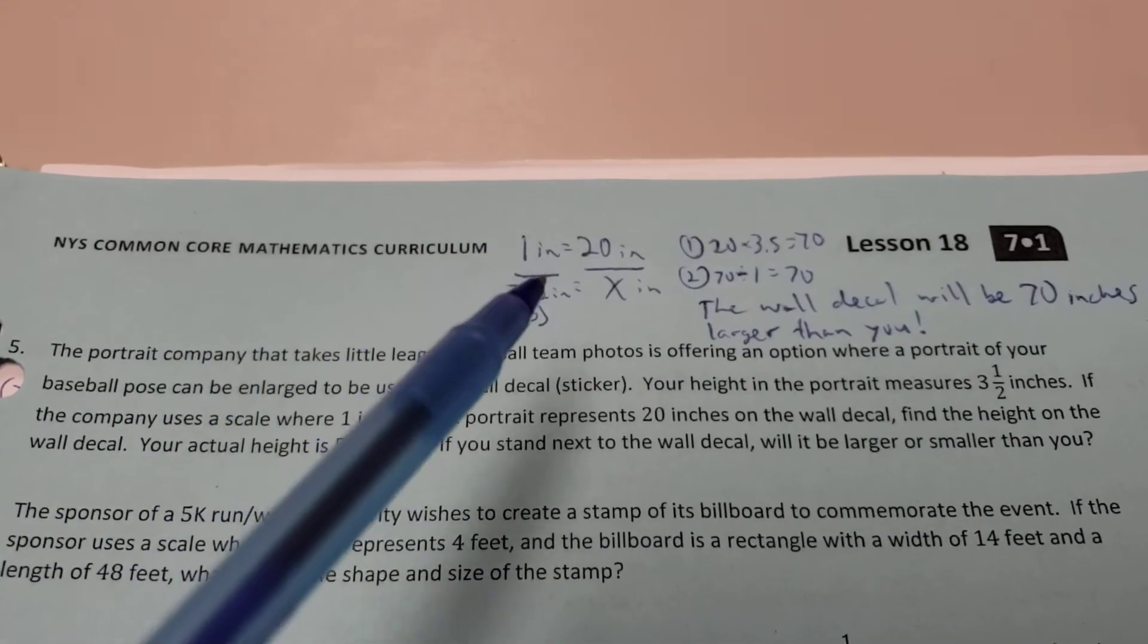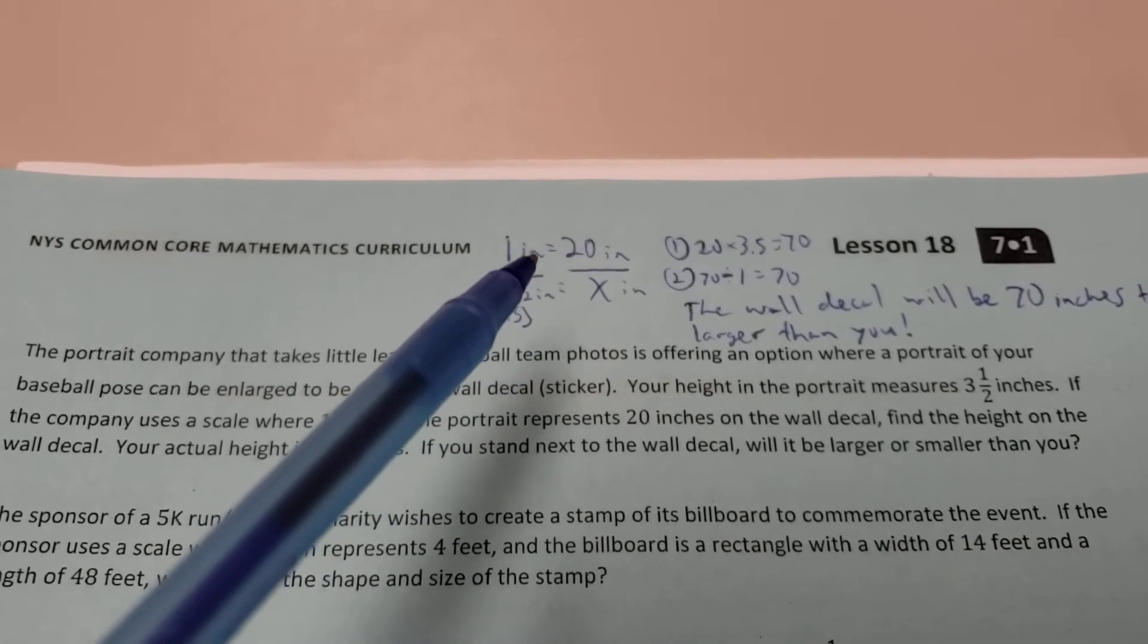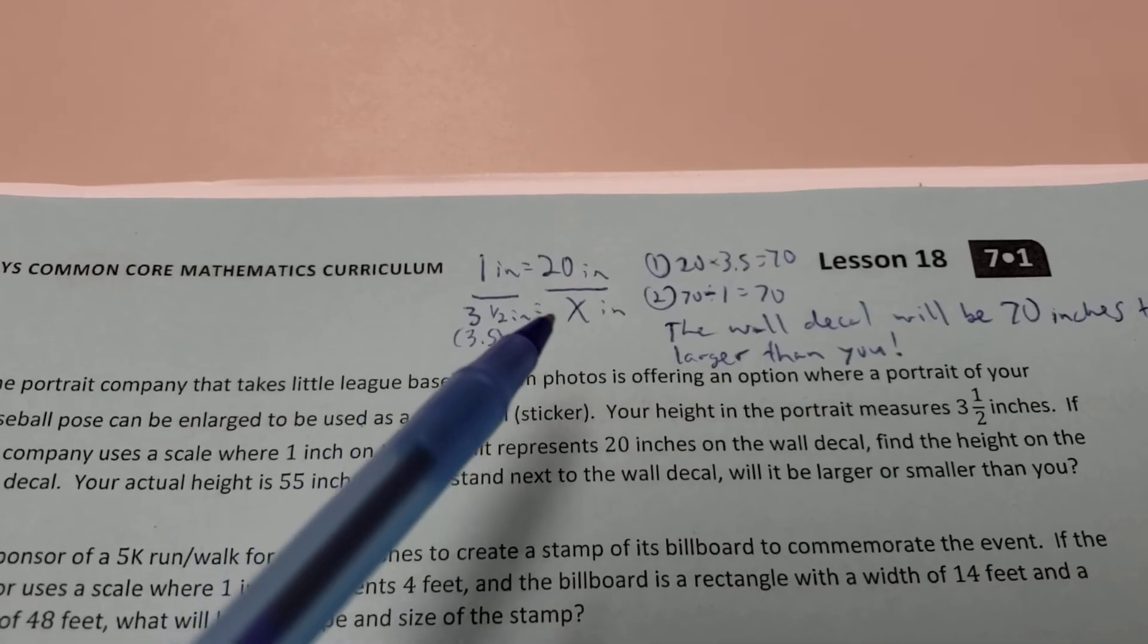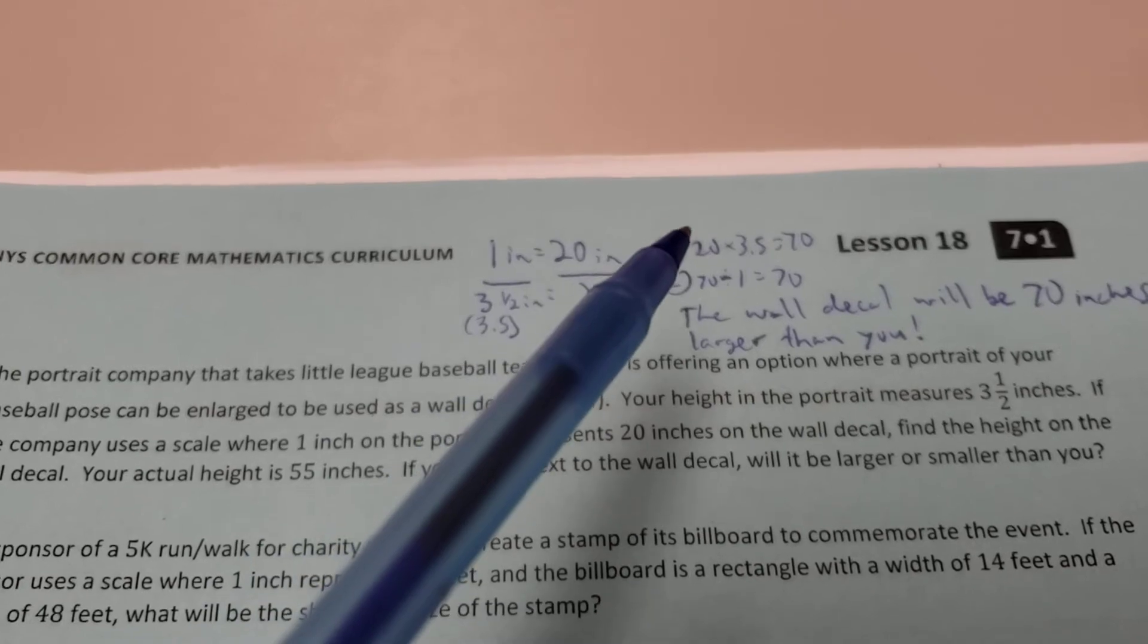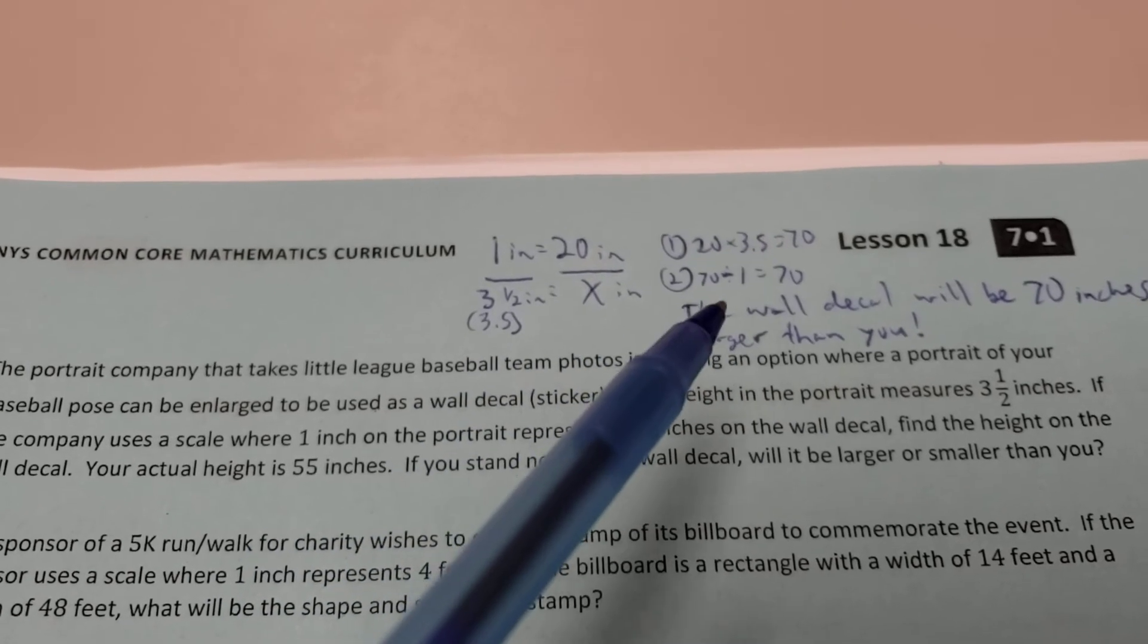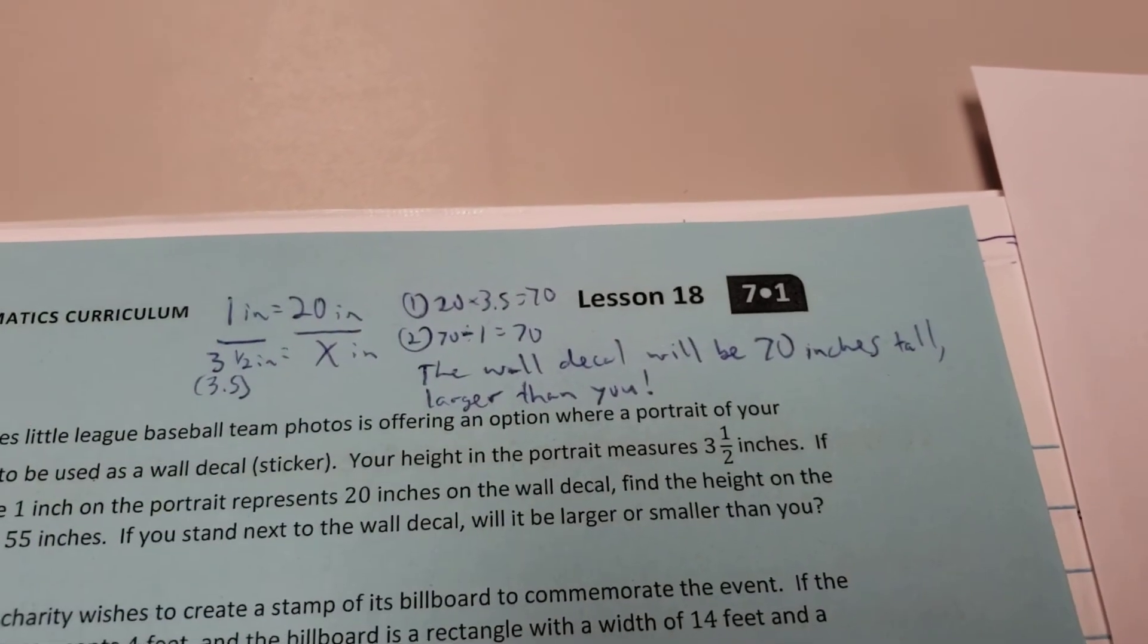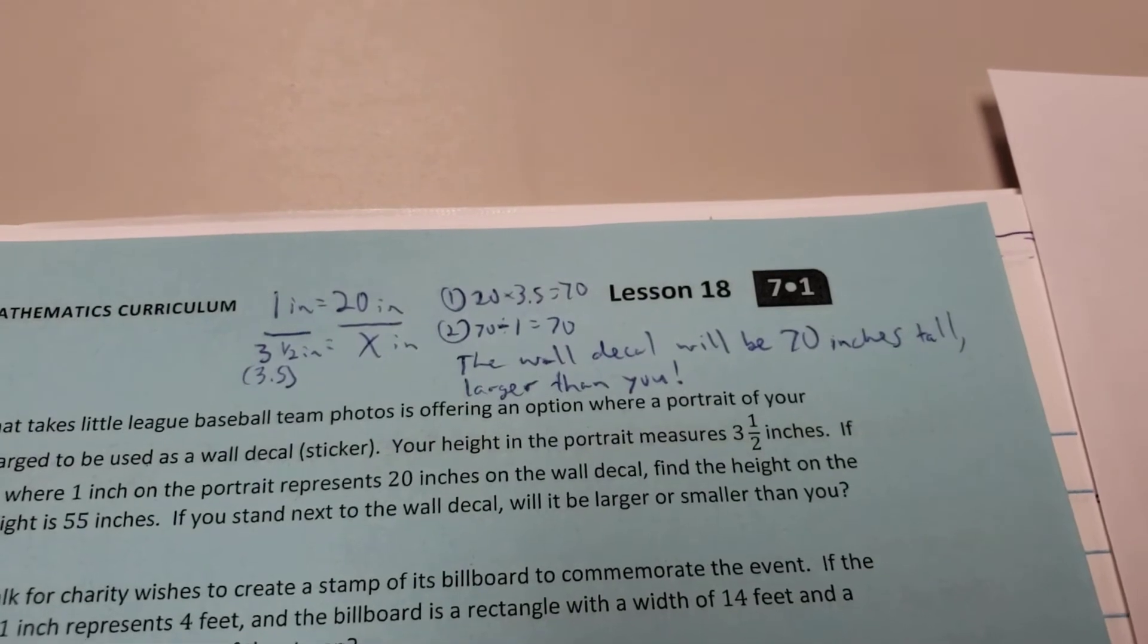Well, let's find out. The scale was 1 inch equals 20 inches. So on the sticker right now, your height is 3 1/2 or 3.5 inches. So how much is that going to translate into? Well, cross multiply what I can. 20 times 3.5 gives me 70. 70 divided by my leftover number of 1 is 70. So the wall decal is going to be 70 inches tall, which is larger than you are. You're only 55 inches tall according to the problem.